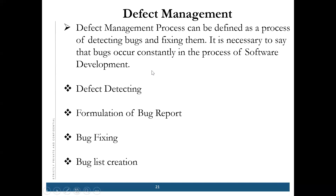Today we will start with defect management. What do you understand by defect management? Defect management is like when we find bugs — when we are developing software and it's not meeting the requirements. That is a bug. And then we report it to the developers through tools like ELM and other tools.